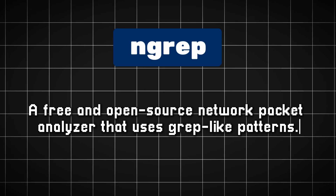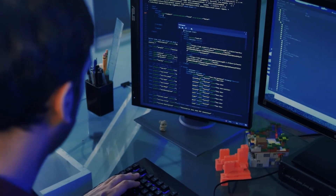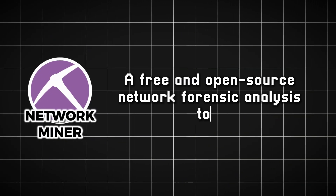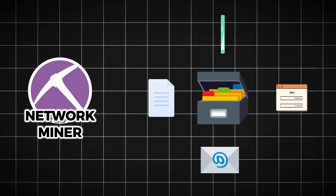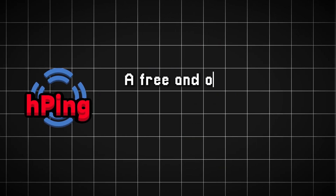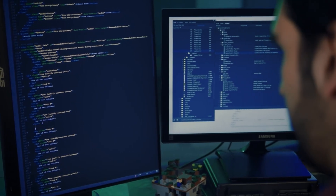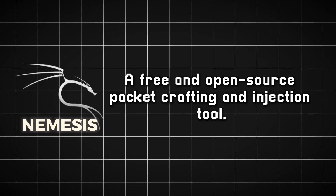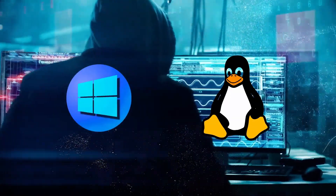Ngrep, a free and open-source network packet analyzer that uses grep-like patterns. The Ngrep tool supports many different protocols across a wide range of interface types. NetworkMiner, a free and open-source network forensic analysis tool. NetworkMiner can extract files, images, emails, passwords, and more from network traffic in PCAP files. Hping3, a free and open-source command-line packet crafting and analysis tool. The Hping3 tool can send custom ICMP, UDP, and TCP packets for use cases such as testing firewalls or network performance. Nemesis, a free and open-source packet crafting and injection tool. Nemesis supports many different protocols and can be used for layer 2 injection on both Windows and Linux systems.